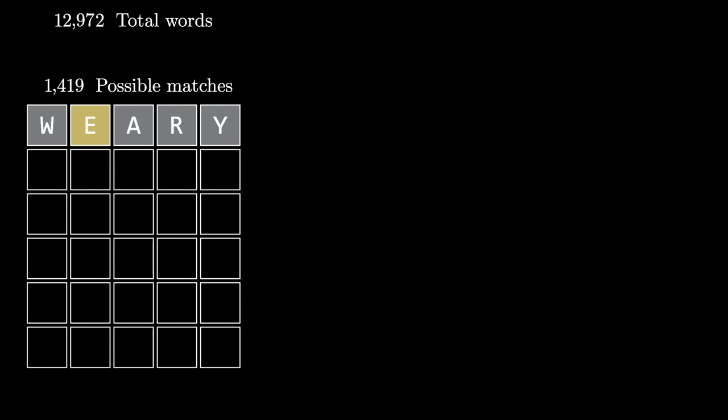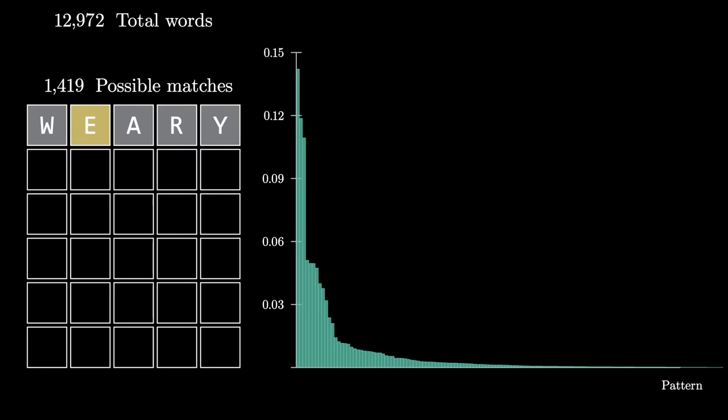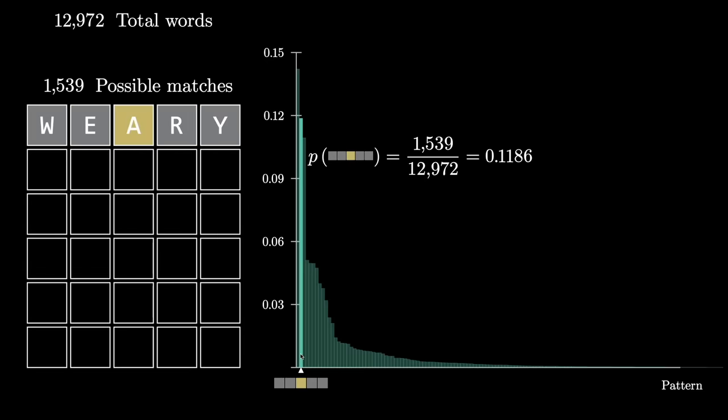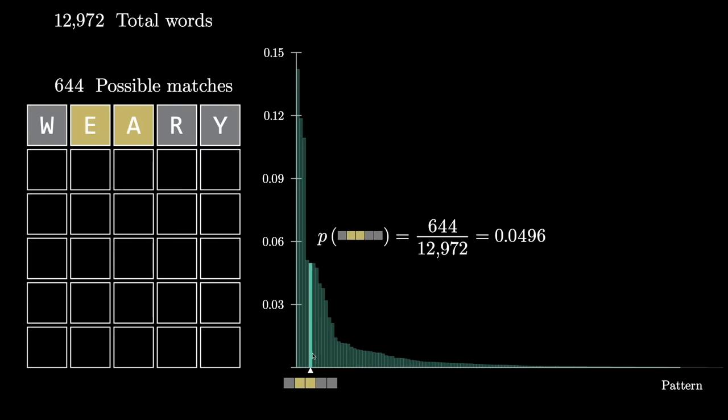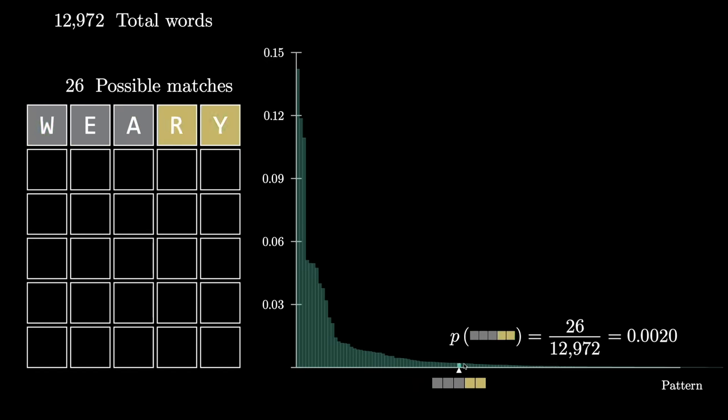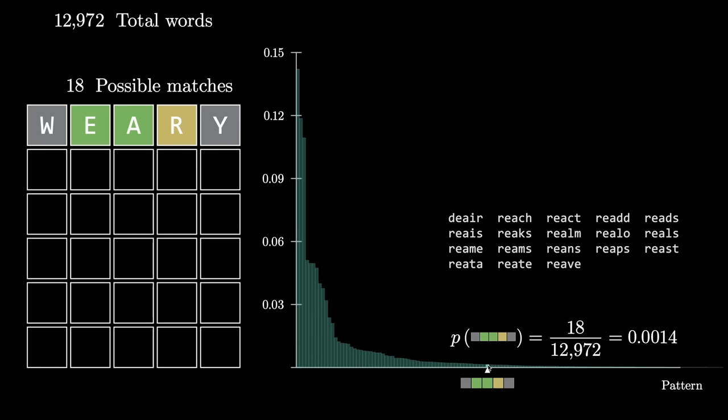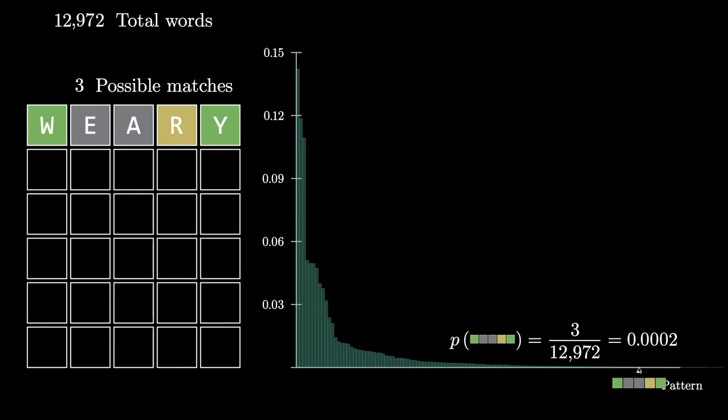To get a more global view here, let me show you the full distribution of probabilities across all of the different patterns that you might see. So each bar that you're looking at corresponds to a possible pattern of colors that could be revealed, of which there are three to the fifth possibilities, and they're organized from left to right, most common to least common. So the most common possibility here is that you get all grays. That happens about 14% of the time. And what you're hoping for when you make a guess is that you end up somewhere out in this long tail, where there's only 18 possibilities for what matches this pattern. Or if we venture a little farther to the left, maybe we go all the way over here. What are the three words in the English language that start with a W, end with a Y, and have an R somewhere in them? Turns out the answers are wordy, wormy, and Riley.